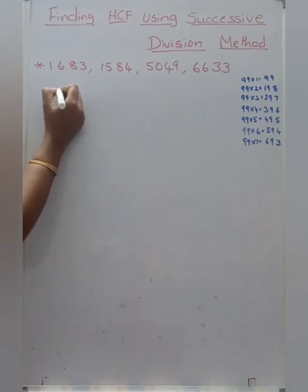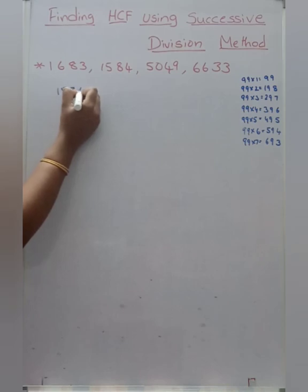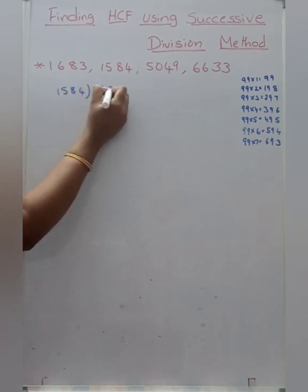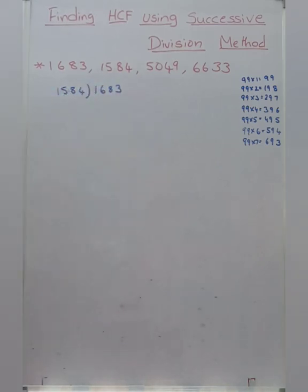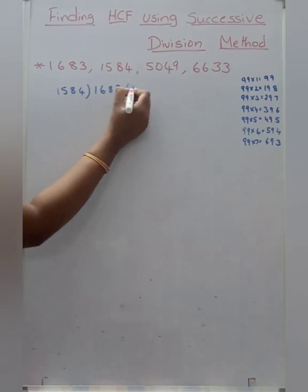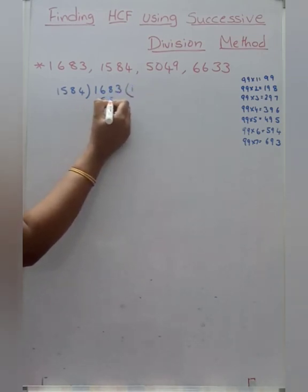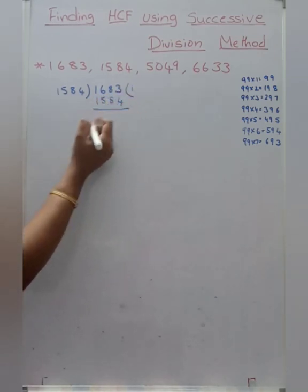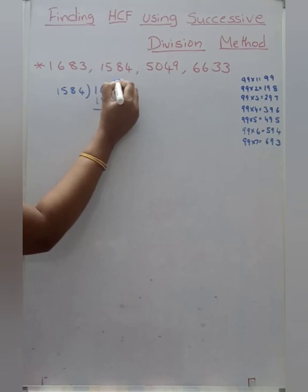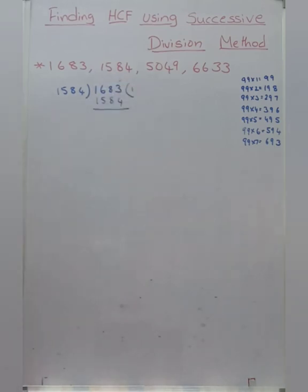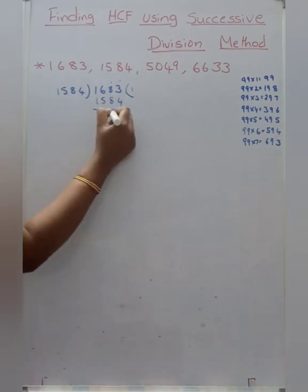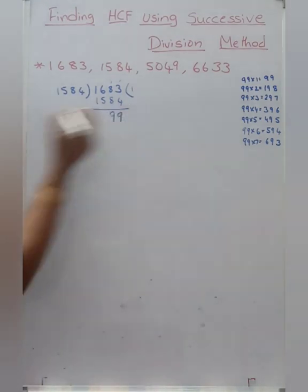Now we have to do division. Here I am dividing 1683 by 1584. This is a different type of division. How many times? One time only. So what is our answer here? That is 99.